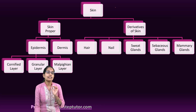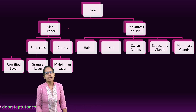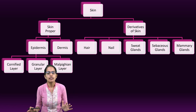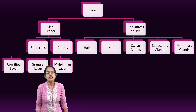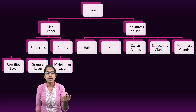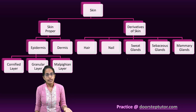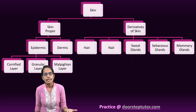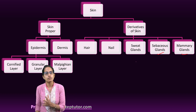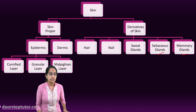Understanding the classification of skin: skin is classified into two important categories — proper skin and the derivatives of skin. The derivatives of skin are very simple. Simple derivatives include nails, sweat glands, oil glands (which are also known as sebaceous glands), and mammary glands. So five derivatives of skin that we understand.